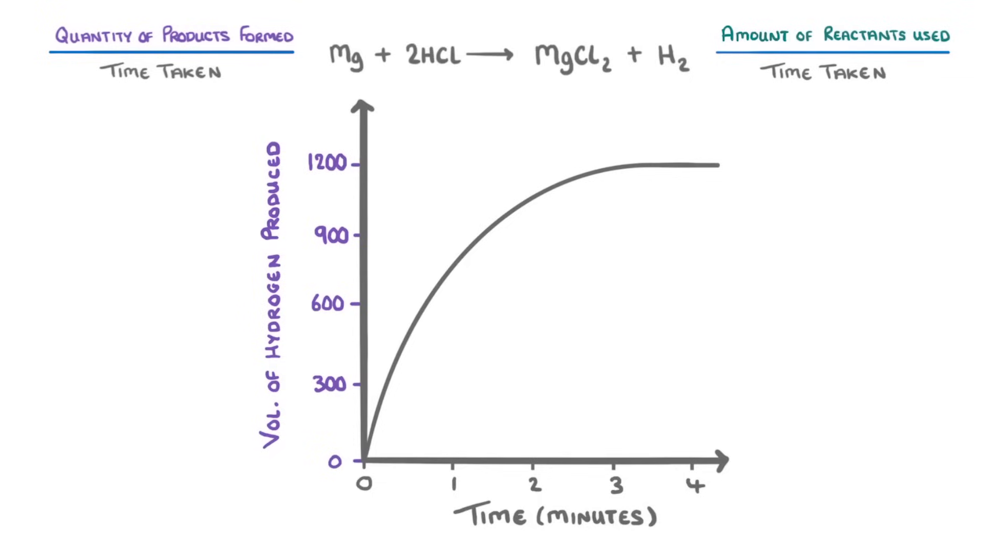With a graph like this, there are two main things that you could be asked to do. One is to calculate the mean rate of the reaction over a certain period, which is what we did earlier.